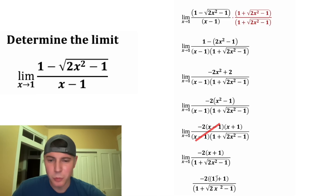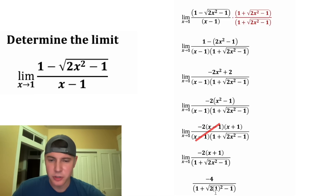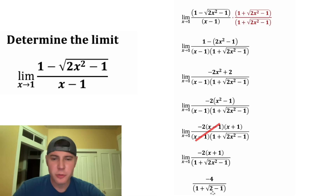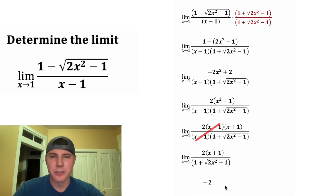Now let's try direct substitution again. Plugging in x = 1: on top, 1 + 1 = 2, and −2 times 2 = −4. On the bottom, 1 squared is 1, 2 times 1 is 2, and 2 minus 1 = 1 under the square root, so √1 = 1, giving 1 + 1 = 2. So we get −4 divided by 2, which equals −2.